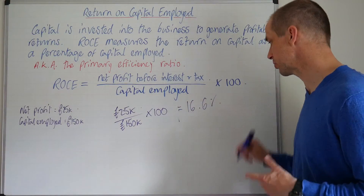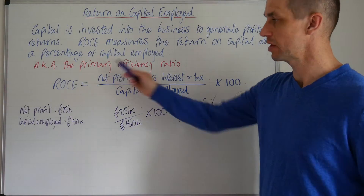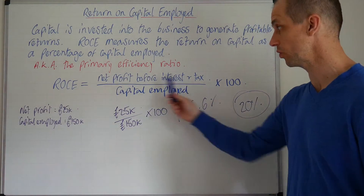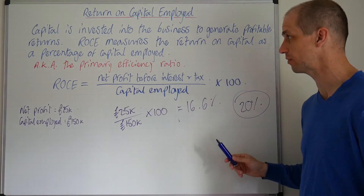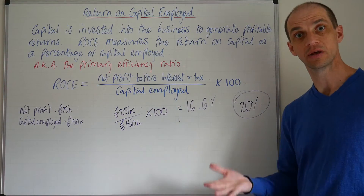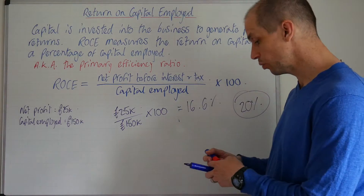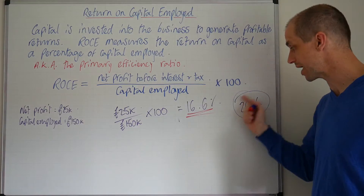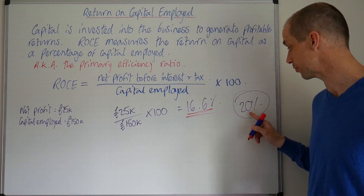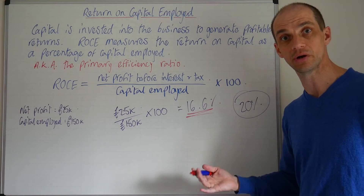What's really relevant is when we compare it to the previous period, which might be 20%. A fall from 20% to 16.6% likely indicates that net profit may have been reduced, and therefore the business is less efficient at generating return on capital employed. Alternatively, it could suggest that capital employed has gone up while net profit remained roughly the same. Either way, we'd need to break down the accounts further. We would certainly want to improve this ratio back up to 20%. Every pound invested previously generated a 20p return; now it only generates 16.6p.